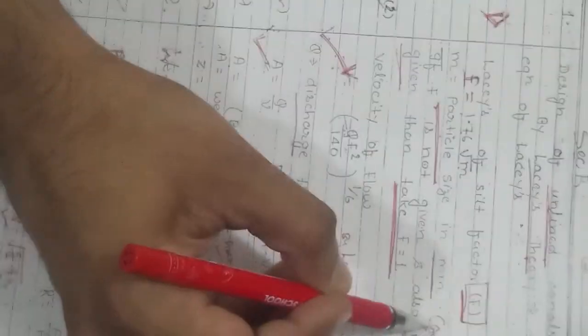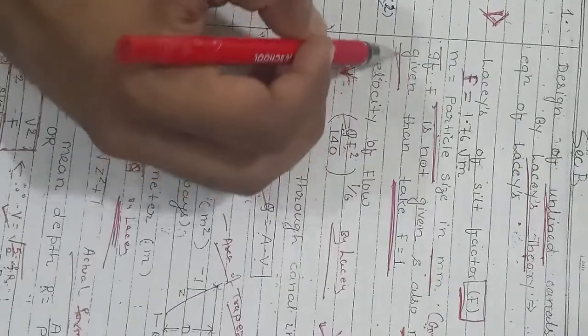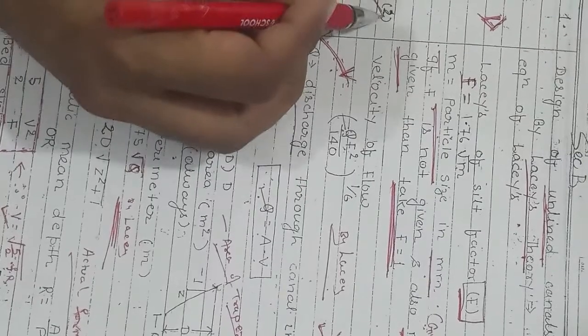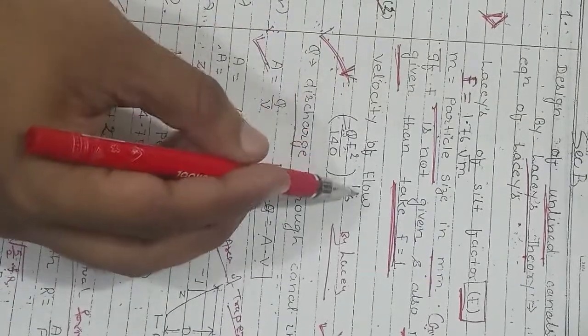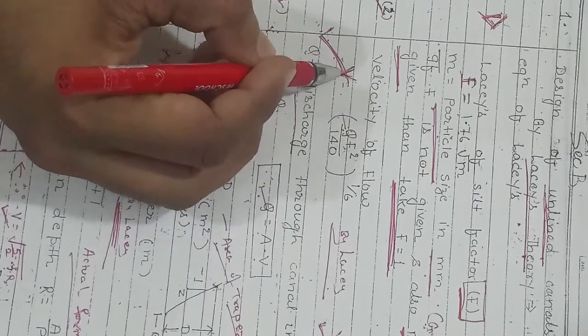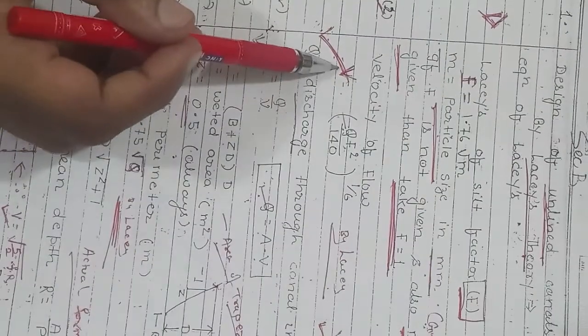Second equation is for velocity of flow. There is another formula given for velocity: V = (Qf²/140)^(1/6). This is the formula derived by Lacey.